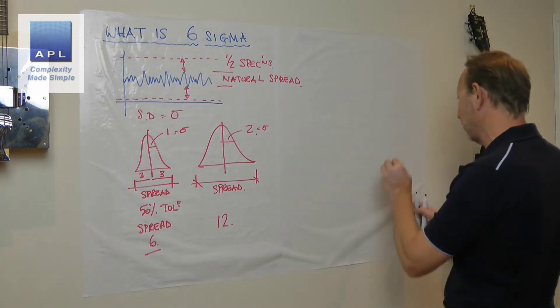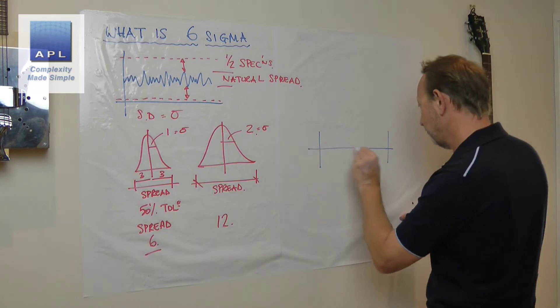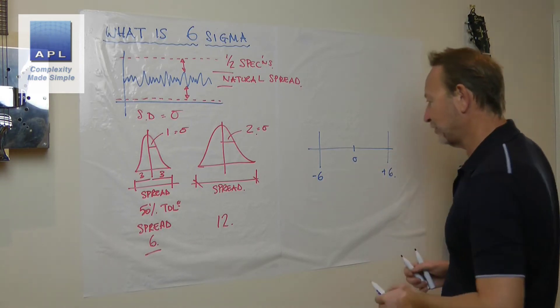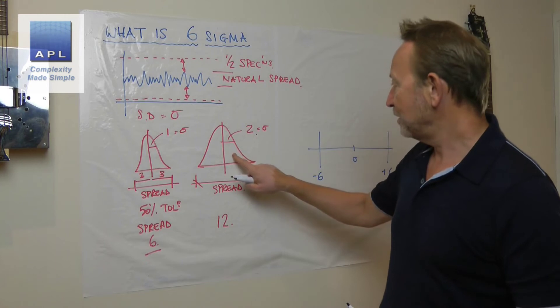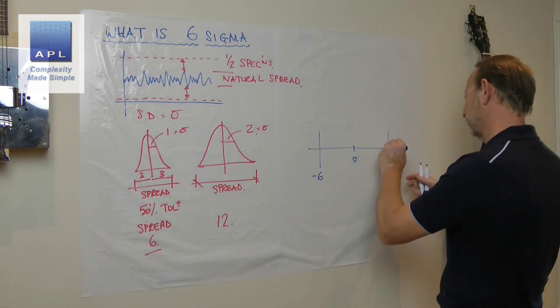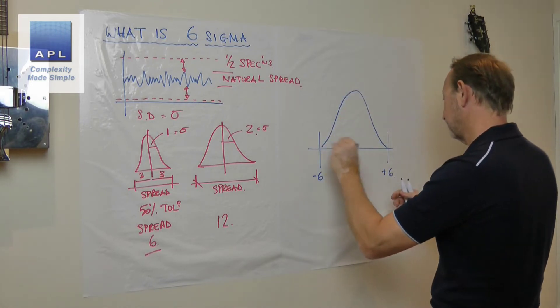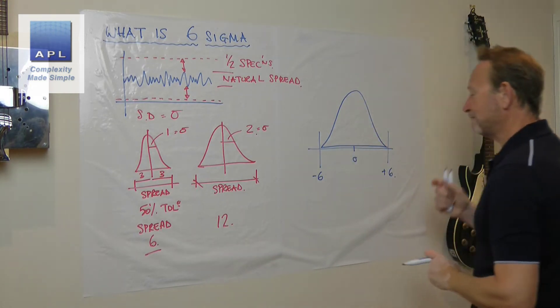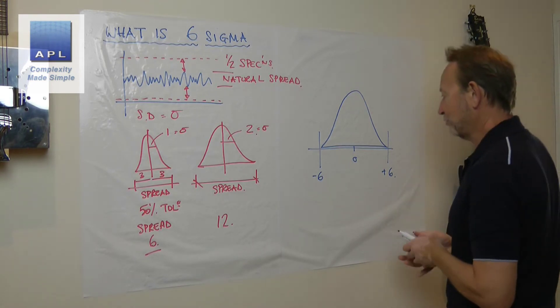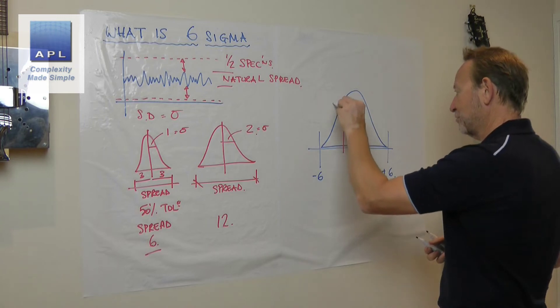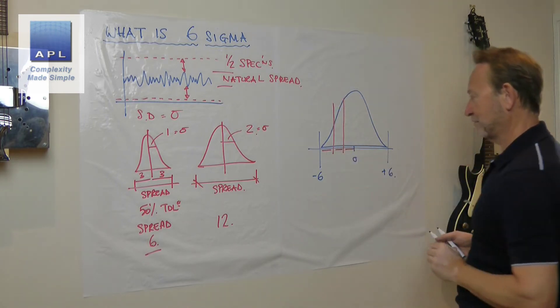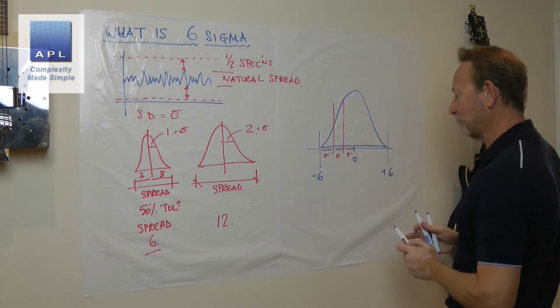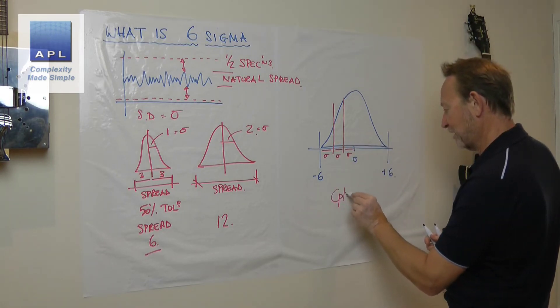If I hold those two processes up to a tolerance, so let's say I'm trying to hit zero and I can go as low as minus six and as high as plus six, this distribution is going to fill that because we have a spread of 12. Now all we're basically saying is how many times does the Sigma fall in here? Look: one Sigma, two Sigma, three Sigma. That's a three Sigma process. The CPK is equal to 1.0, the Sigma value is equal to three.